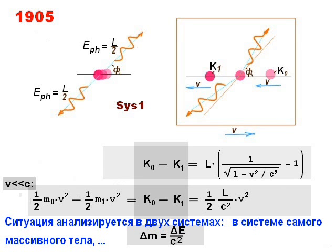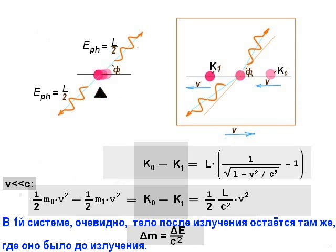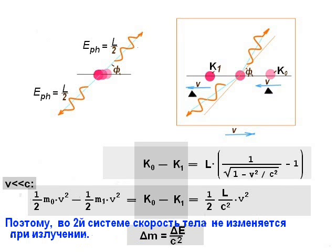The situation is analyzed in two systems. In the massive body system, and in the second any other moving system. In the first system, obviously, the body after emission remains where it was before emission. So, in the second system, the body does not change its velocity at the emission.